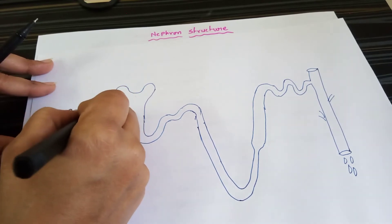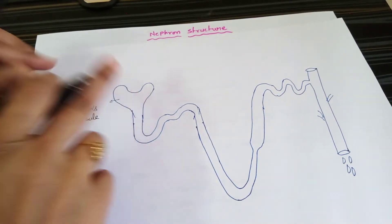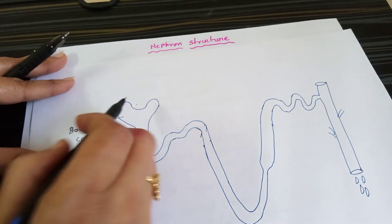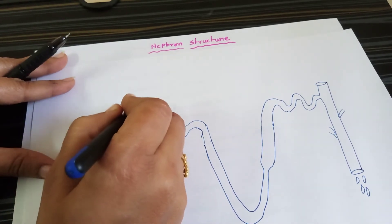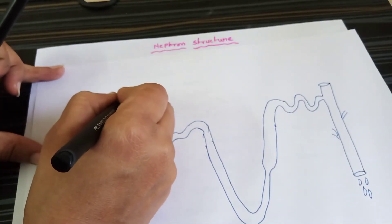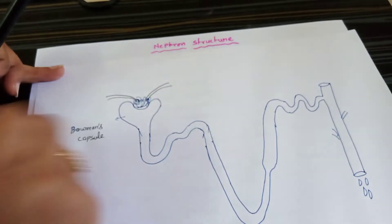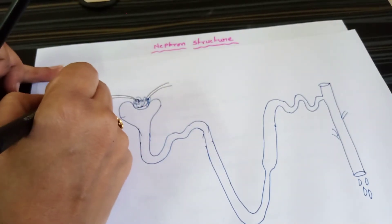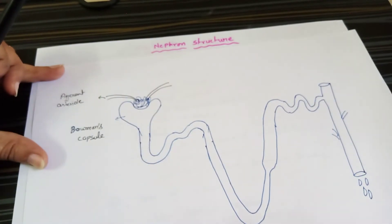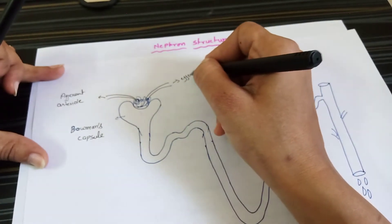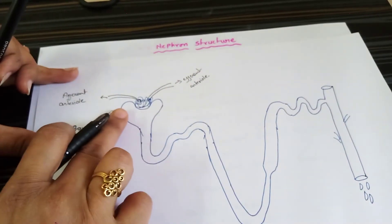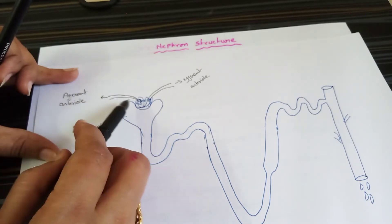This part is called Bowman's capsule. There is a filter present called the glomerulus. You have to draw this type of filter here. There are two arteries attached — this is the afferent arteriole and this is the efferent arteriole. So this is the Bowman's capsule.